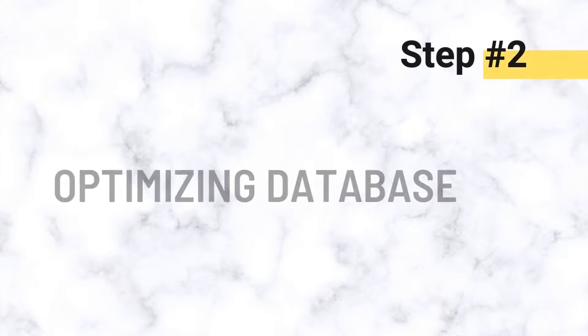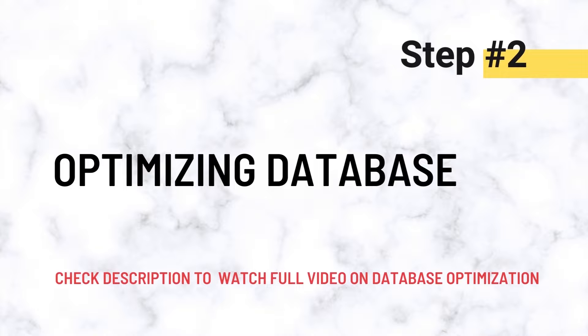If you want to see an effective video on caching and how I got 100 out of 100 for Google PageSpeed Insights, check the card on the top or the description of this video. The second thing: optimize the database — delete unused tables and don't keep old post revisions. Check my detailed video on optimizing the database in the description or on the card on the top.